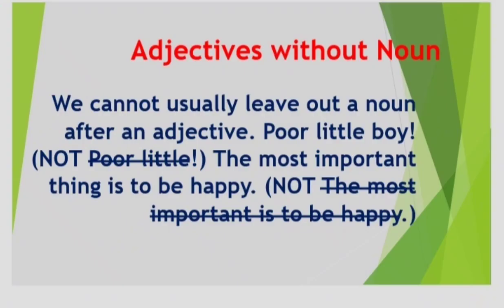This is an interesting topic — watch it out till the end. Adjective without noun: we cannot usually leave out a noun after an adjective. For example, 'the poor little boy' — here 'little' is an adjective describing 'boy,' so we cannot remove the noun. Similarly, 'the most important thing is to be happy' — here 'important' is an adjective and 'thing' is the noun describing it, so we cannot leave it out.